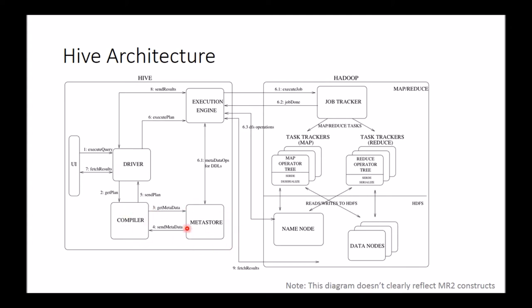Behind the scenes, the Metastore is a central repository where all the metadata about a table is stored — things like the table's type definition, what columns it contains, and where the data is actually stored.